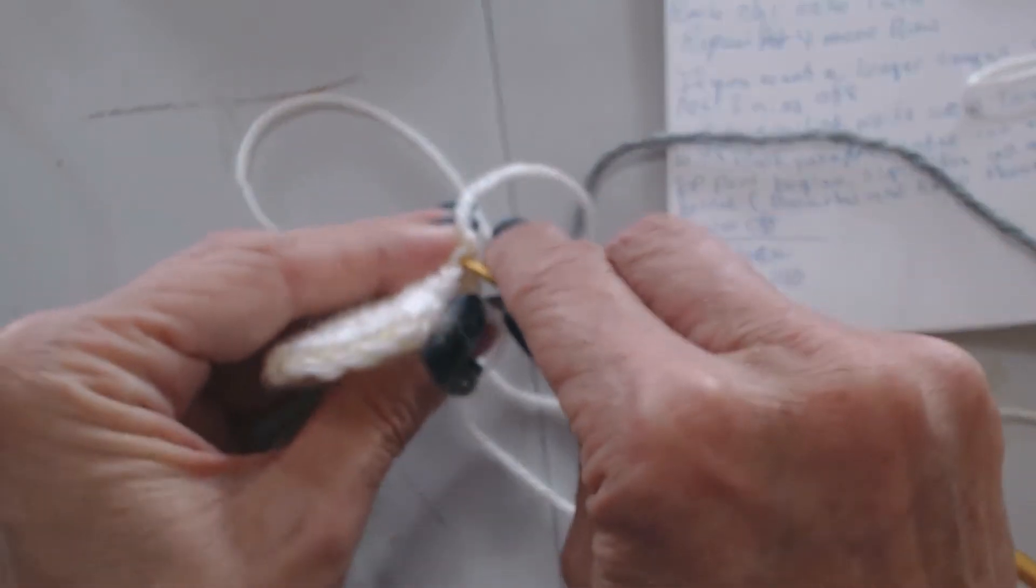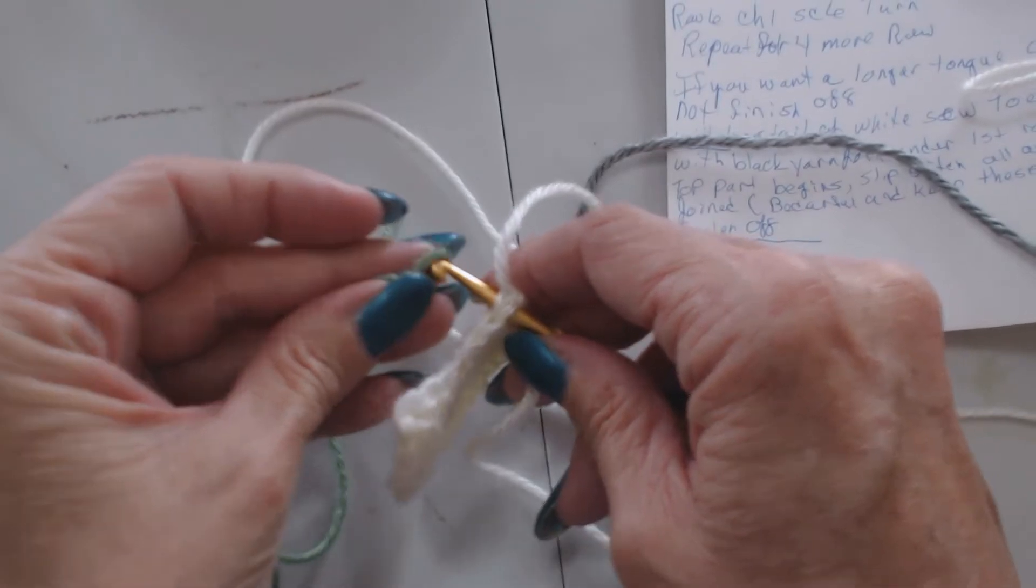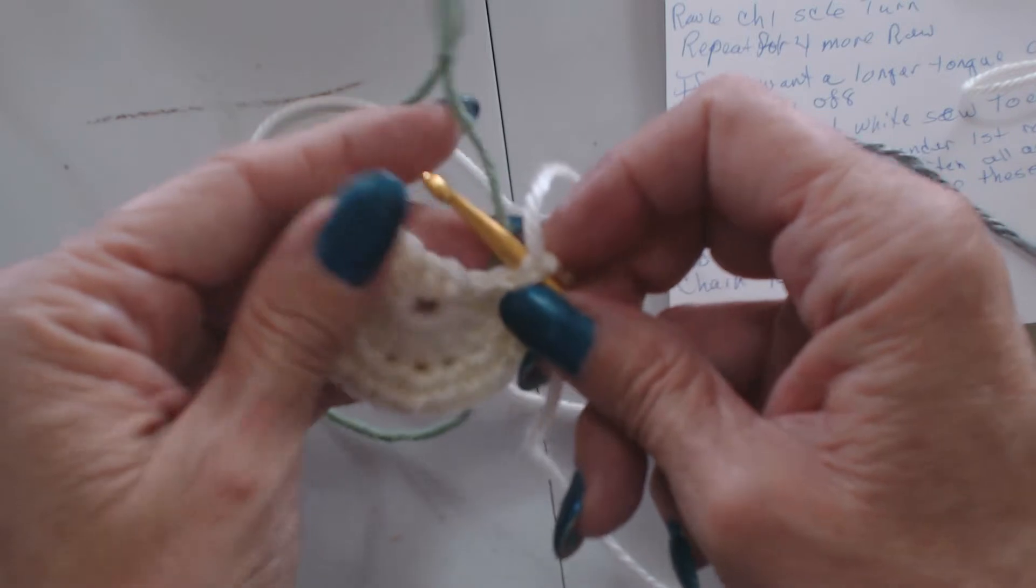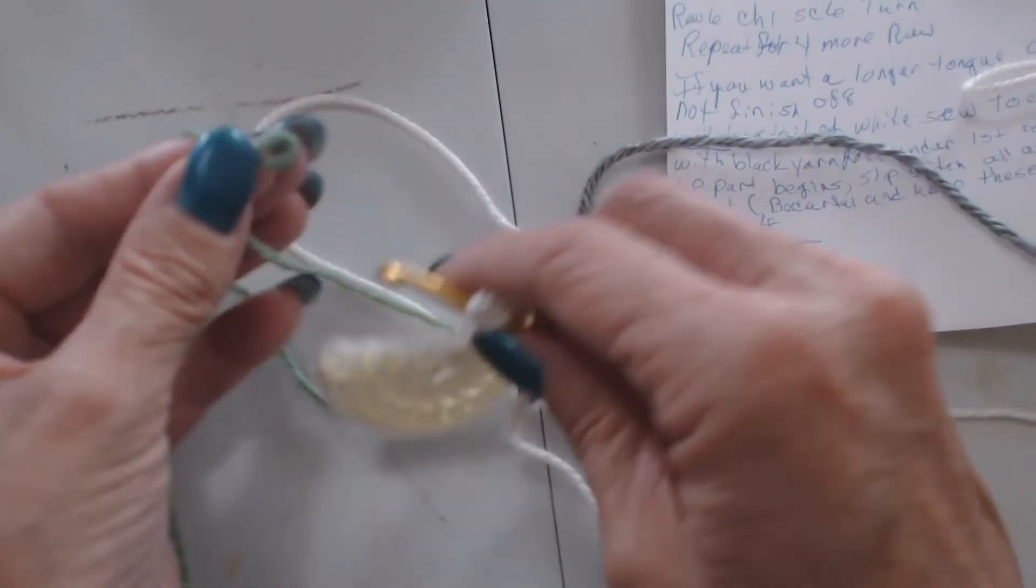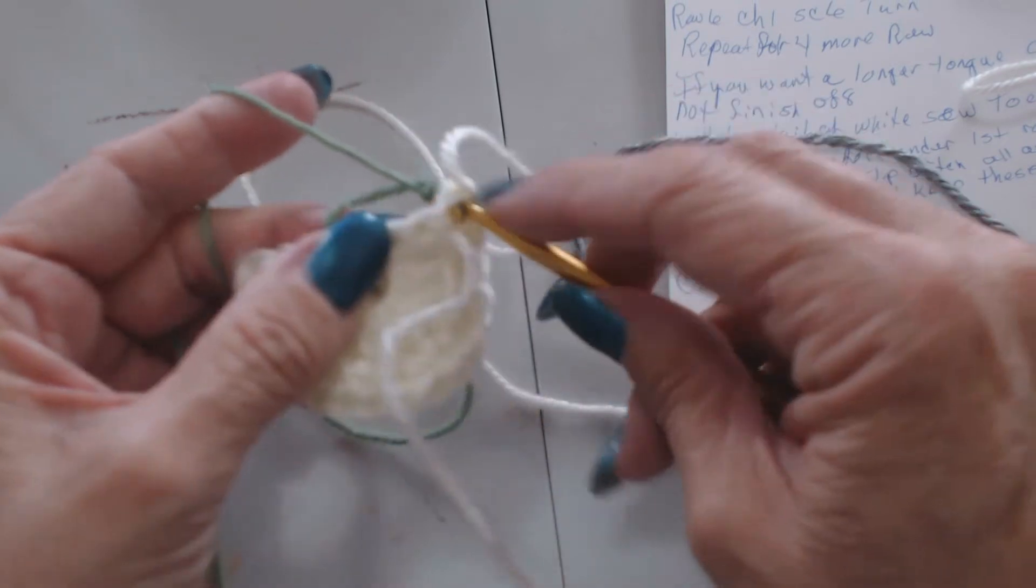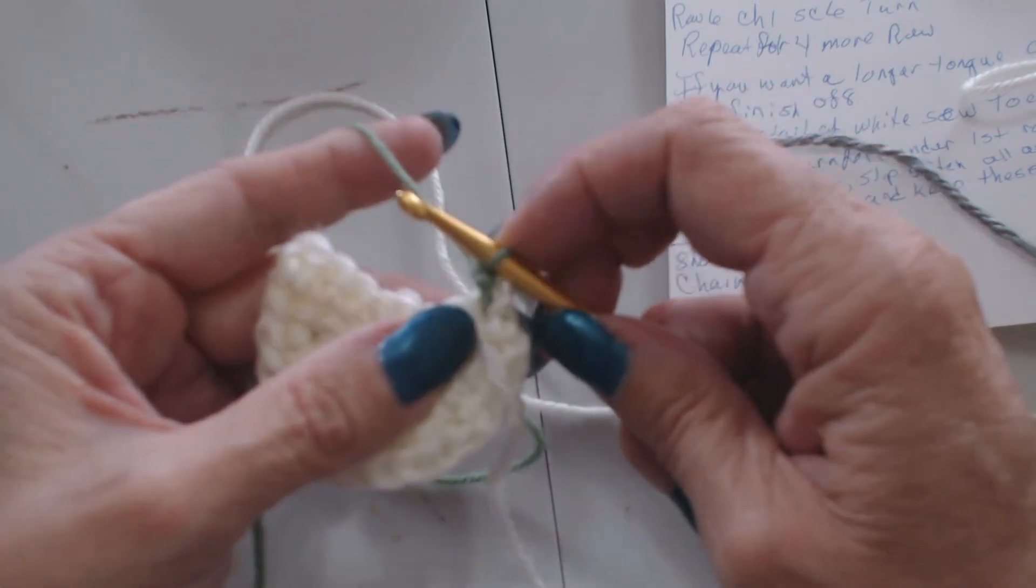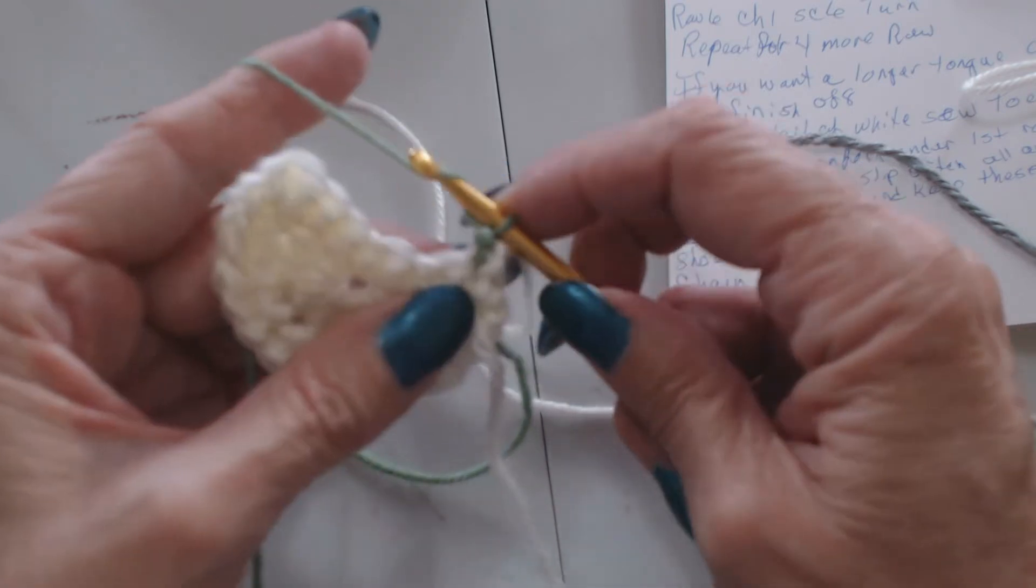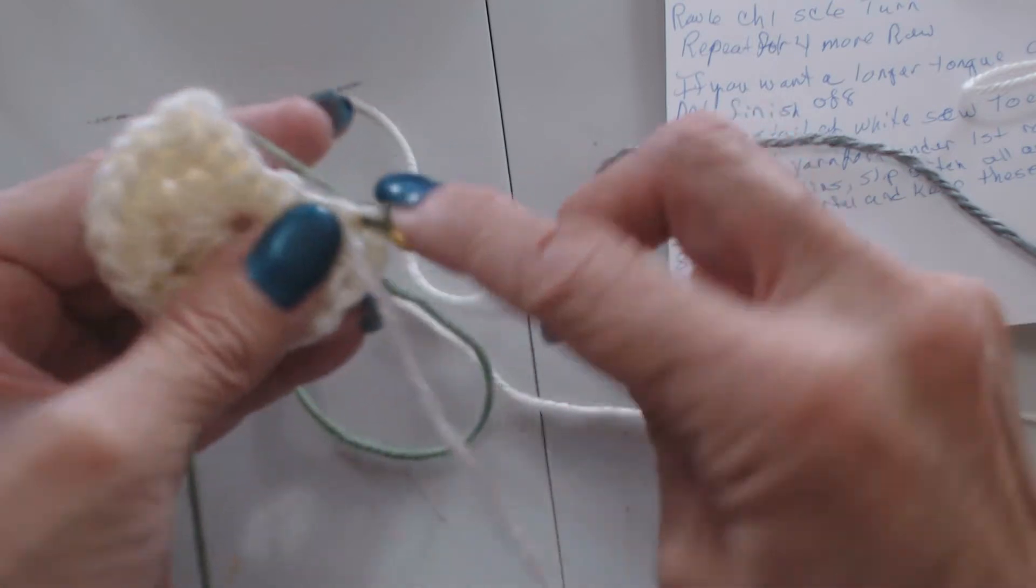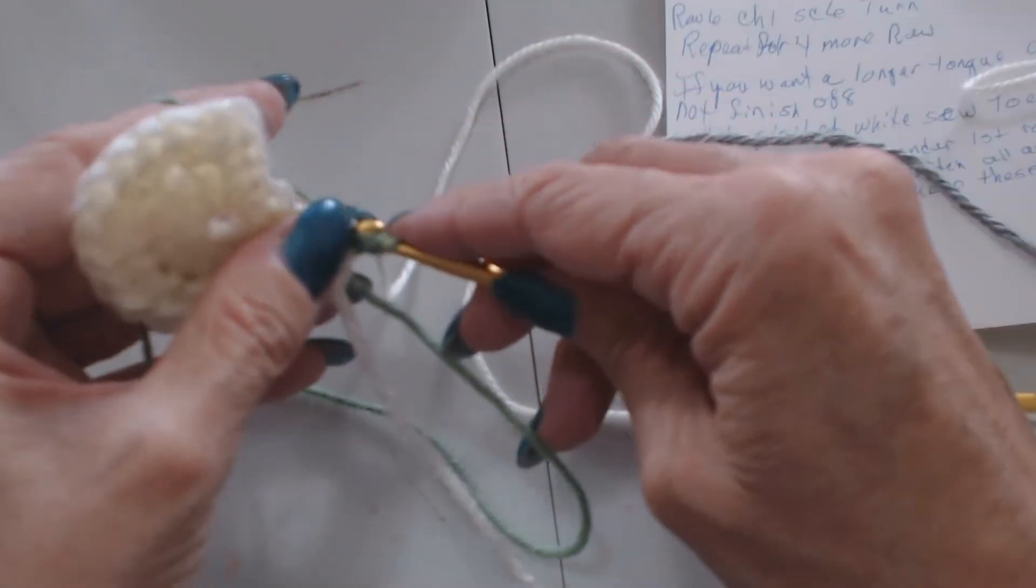I'm going to take my tail here. There we go. Slip stitch. Chain one. Now I'm going to single crochet right back into that. I'm going to leave that tail out because we want to use that.